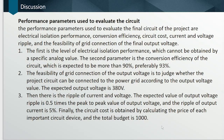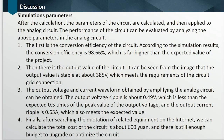To evaluate our circuit, we need to assess five parameters: electrical isolation performance, conversion efficiency, circuit cost, current and voltage ripple, and the final output voltage. The level of electrical isolation performance cannot be obtained by a specific analog value, so it needs to be tested through experiment. We want our efficiency to be more than 90%. To ensure the project can be connected to the power grid, the output voltage should reach 308V peak voltage. The expected output voltage ripple is 3.5% of the peak-to-peak output voltage, the output current ripple is 5% of output current, and the total budget should be within 1000 yuan.